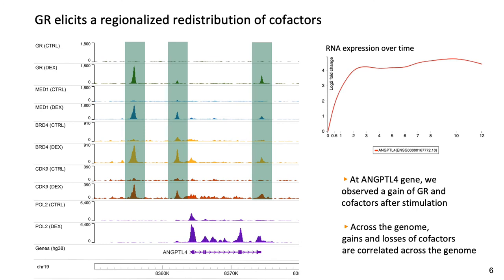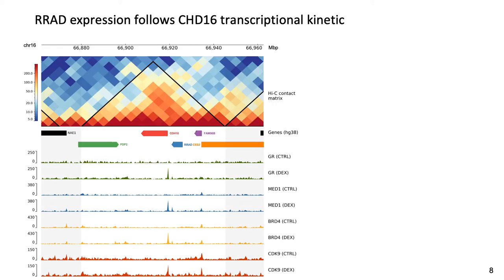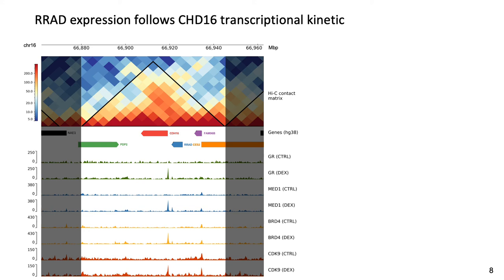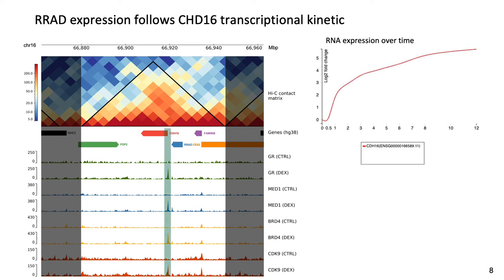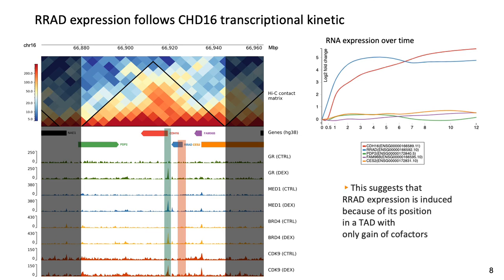Further analysis showed that gains and losses of co-factors are correlated across the gene. Then, we counted the number of gains and losses per TAD and attributed a score to each TAD. Here, we can observe that TADs are biased towards gains or losses. We are here in a particular TAD that contains several genes. We can observe the gain of GR and co-factors at the promoter of the CHDL6 gene as a result of activation of transcription. However, at the promoter of the RRID gene, we noticed an odd absence of GR and co-factors. But RRID expression follows CHDL6 transcriptional kinetics without any direct regulation by GR. This suggests that RRID expression is induced because of its position in a TAD with only gains of co-factors.